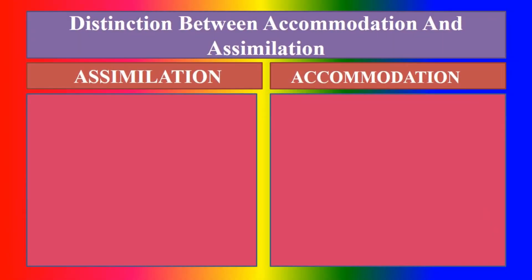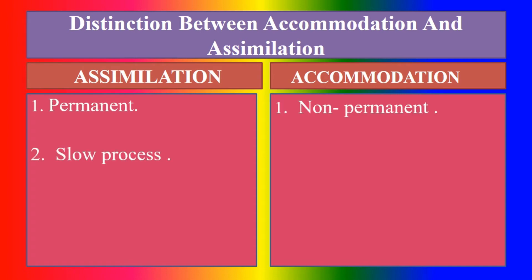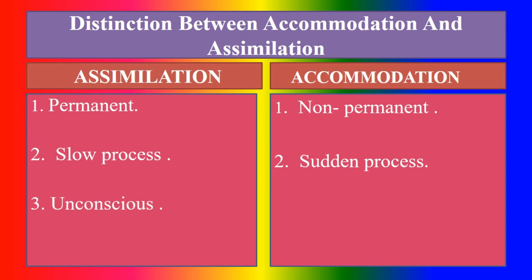What are the differences between accommodation and assimilation? First, assimilation is permanent but accommodation is non-permanent. Second, assimilation is a slow process but accommodation is a sudden process — immediately after conflict. Third, assimilation is unconscious but accommodation is deliberate.